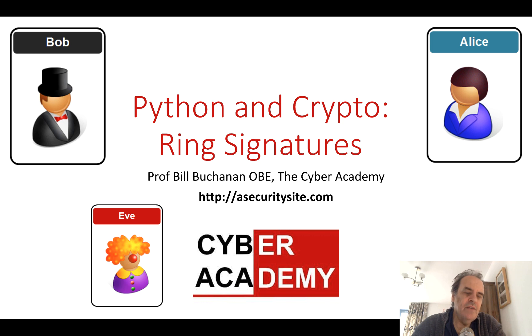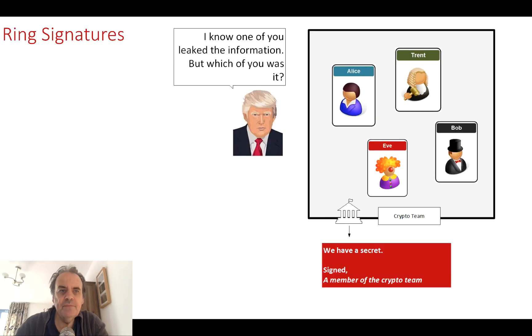Let's have a look at ring signatures. We'll do some basics around the basic principles, then we'll look at how they're going to be used in cryptocurrencies and within blockchain methods. The whole idea behind ring signatures is: is it possible to have a trusted set of signers that are able to sign a message, and it's not able to tell which of the entities within the trust infrastructure actually signed the message?